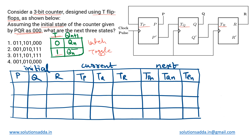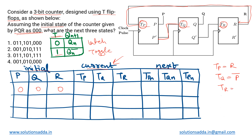Using that truth table, we will fill up the state table. The initial state PQR is triple zero. We determine the current state by looking at the circuit diagram. Tracing back the lines: TP takes its value from R, so TP = R. Similarly, TQ is given as P complement. For TR, the value it takes is Q complement.